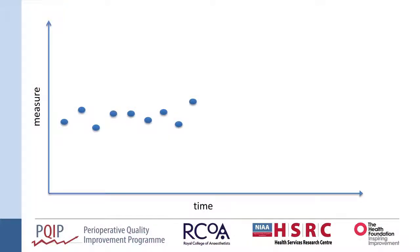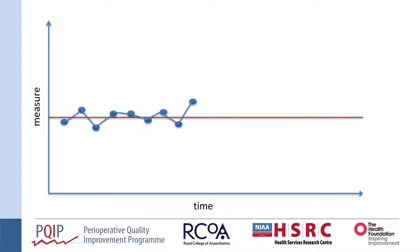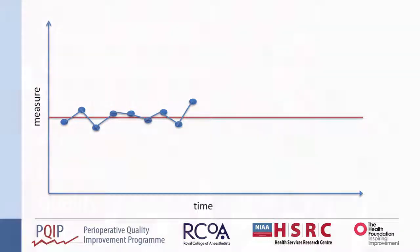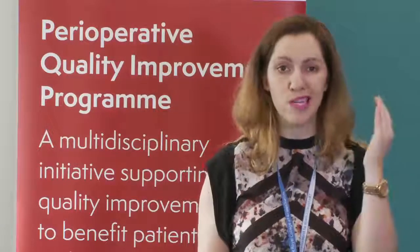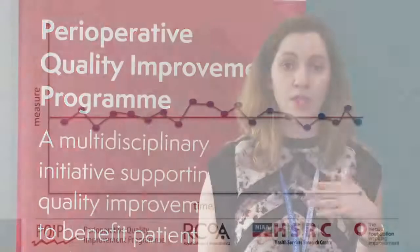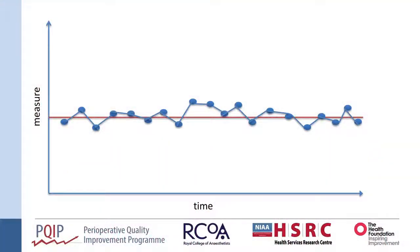You plot your initial data in chronological order — that's very important — and you join the dots together. Once you have about 10 to 12 data points, you can then plot in the median value as a horizontal line across the chart. The median line is calculated by ranking your data and finding the middle value. This line is going to help you see if there are any patterns in your data that are not random, to which you can attribute a cause.